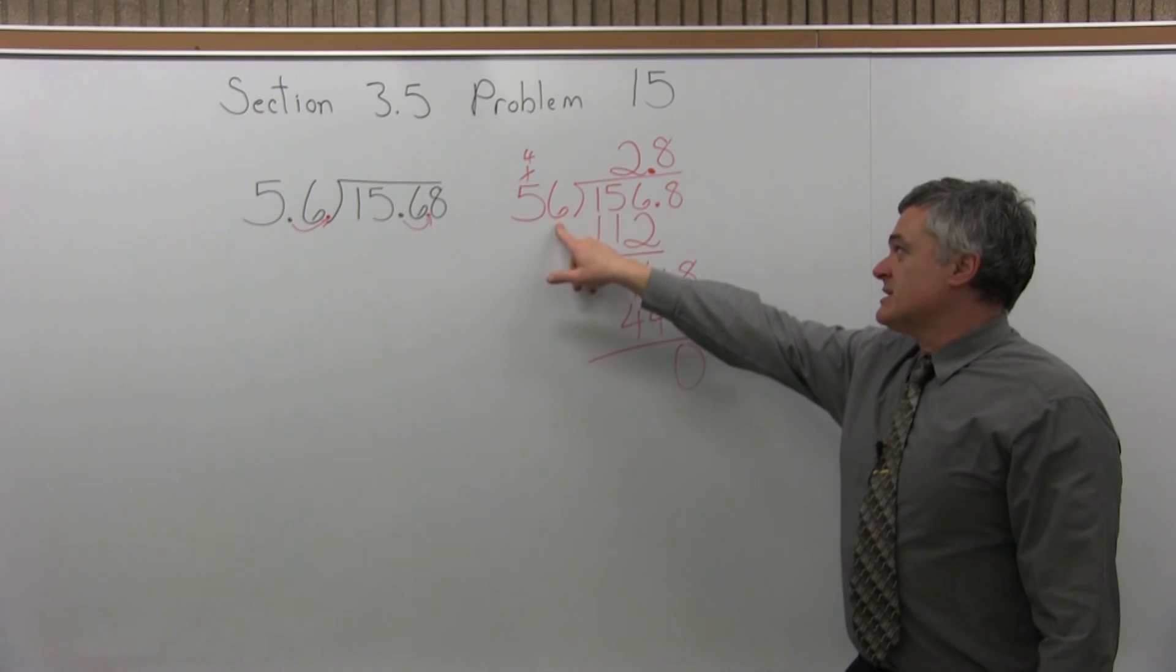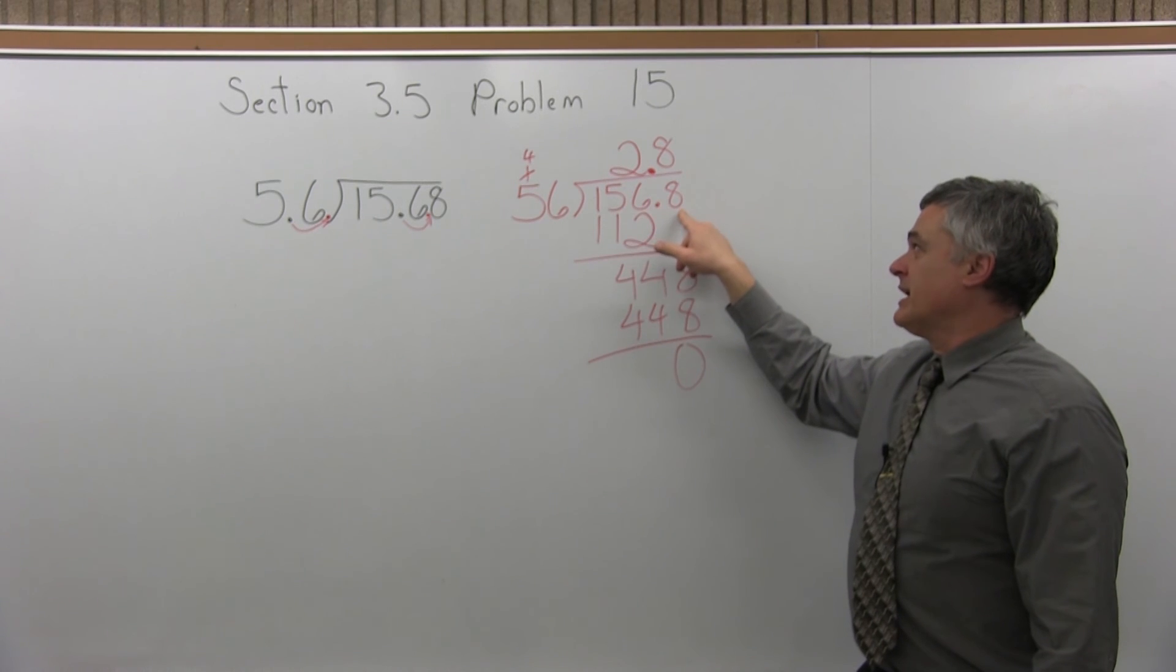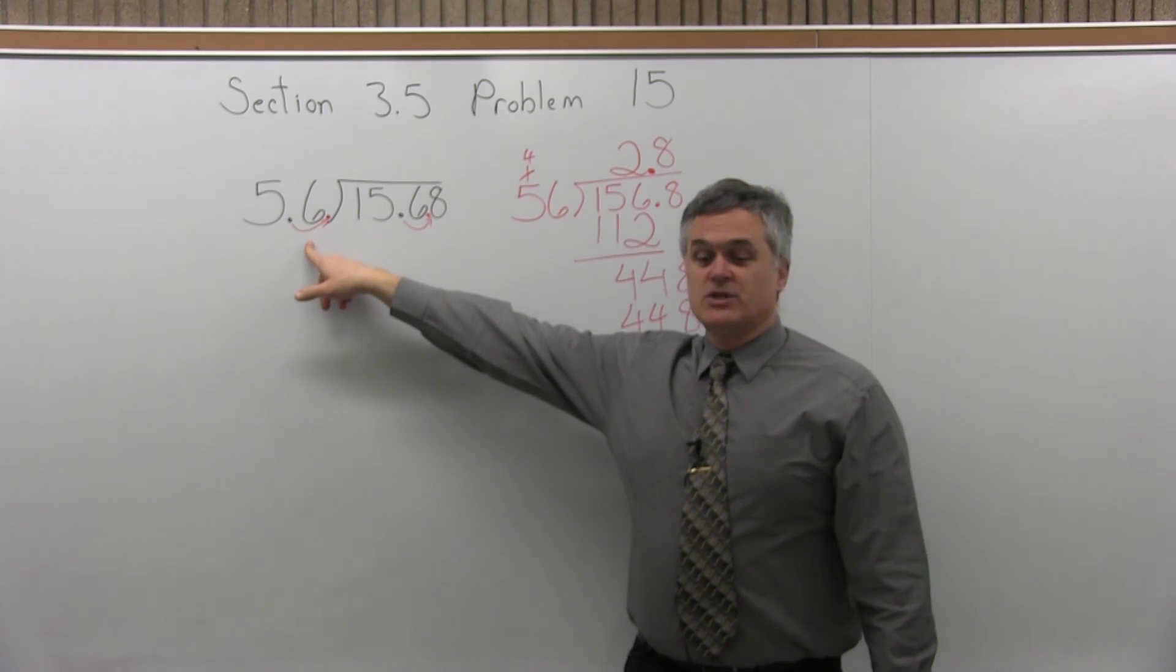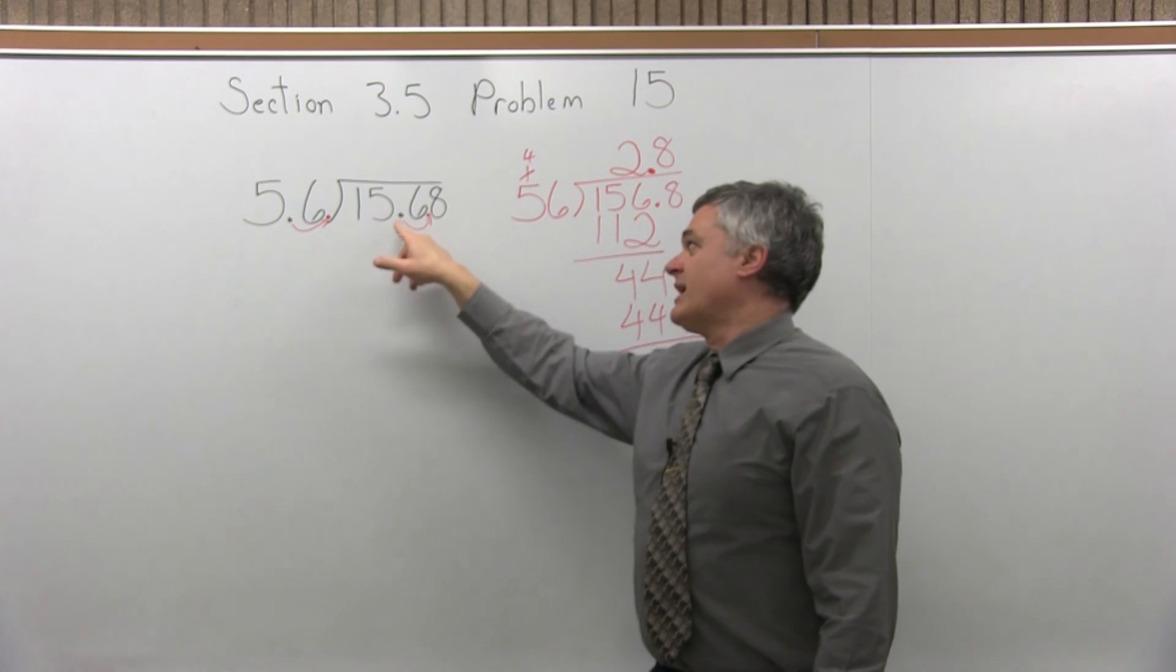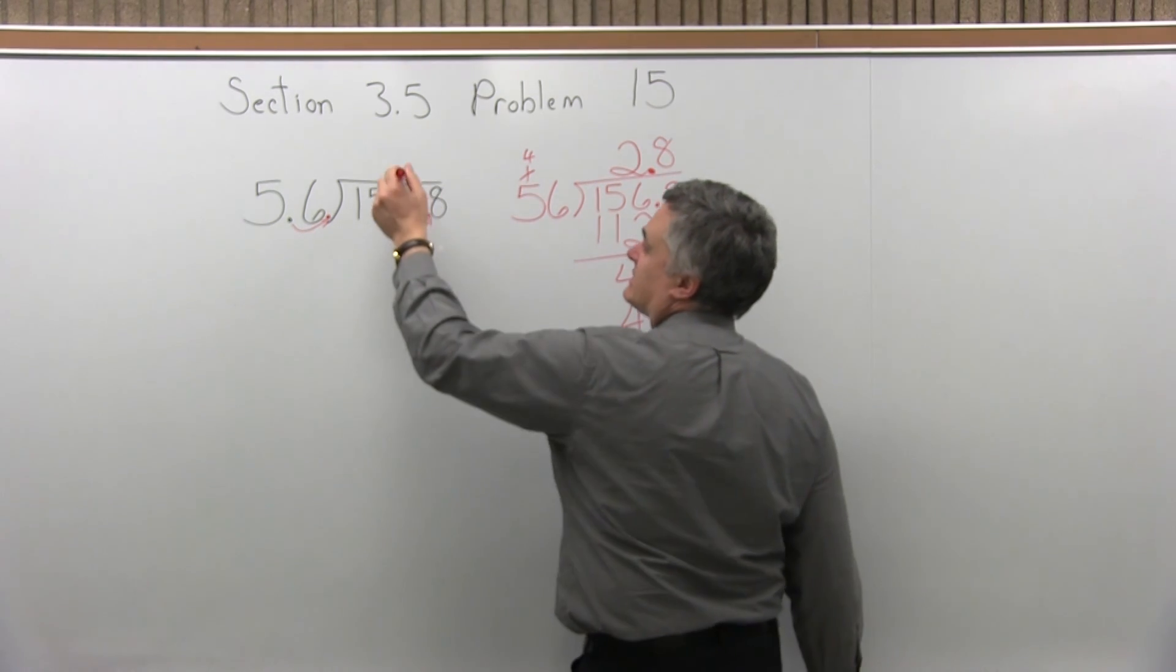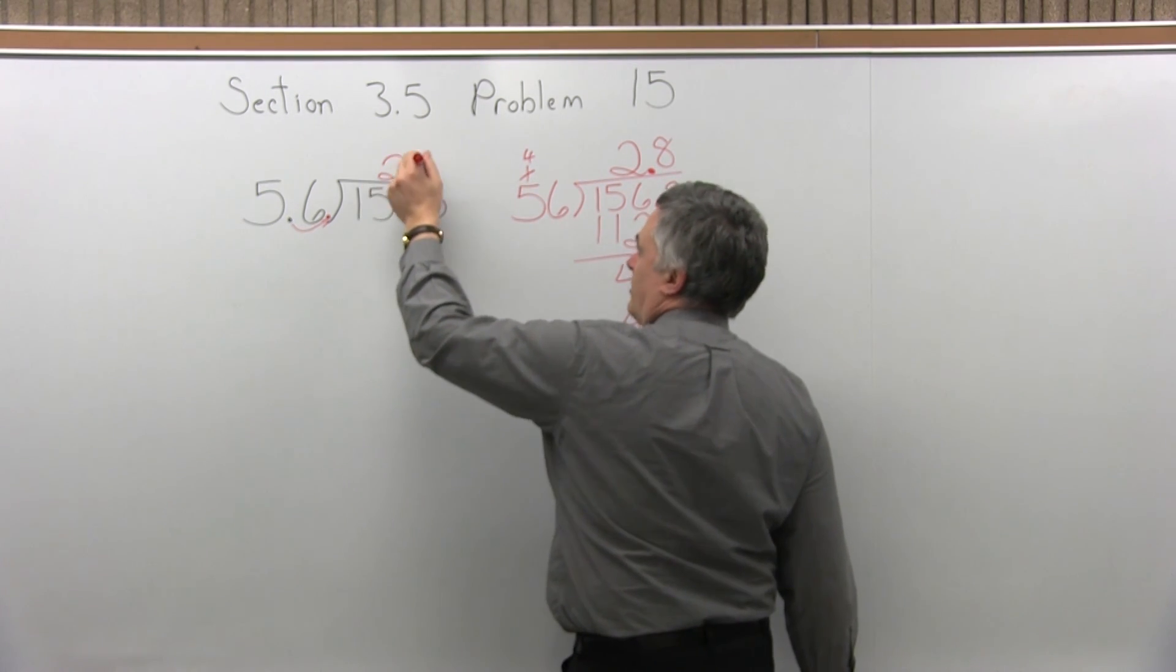The answer for 56 divides into 156.8 is 2.8. The answer to the original question is also 2.8. 5.6 divided into 15.68 will be 2.8.